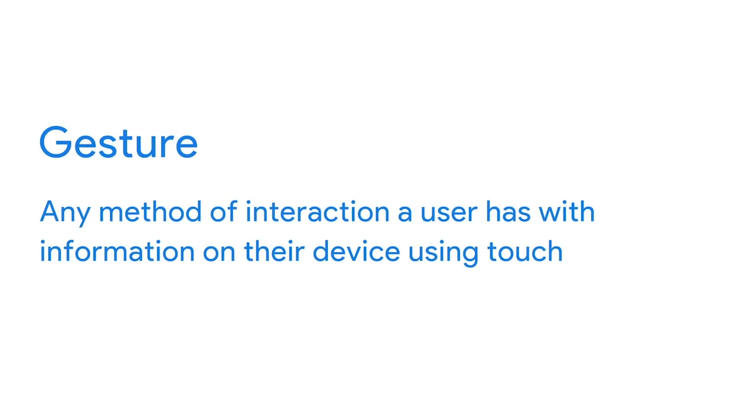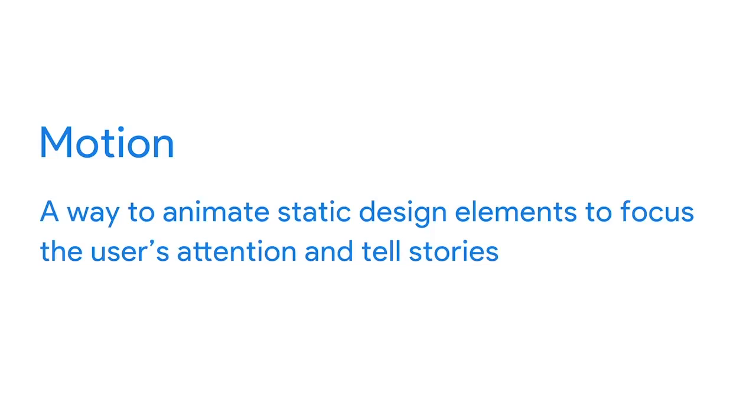Before you learn about the additional steps to create a high-fidelity prototype in Figma, I want to introduce you to two concepts: gestures and motion. A gesture is any method of interaction a user has with information on their device using touch. The most common gestures are tapping, scrolling, swiping, and zooming. Motion is a way to animate static design elements to focus the user's attention and tell stories.